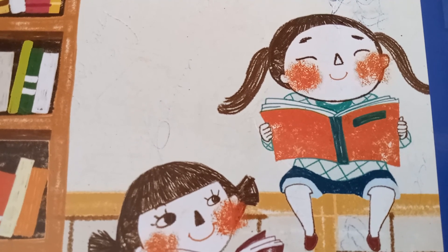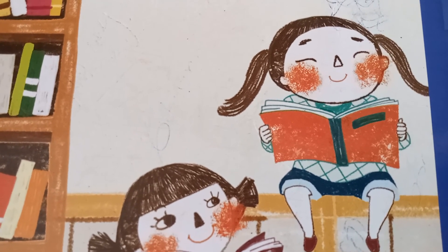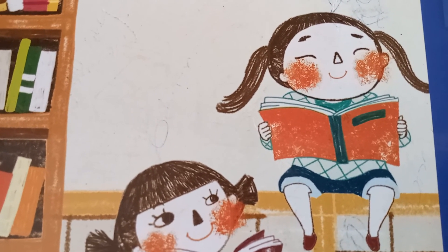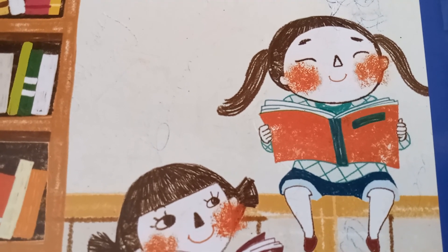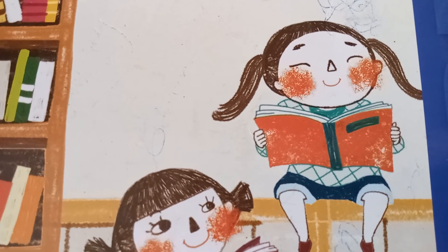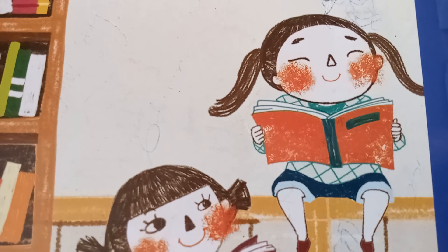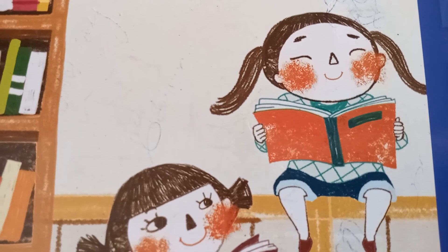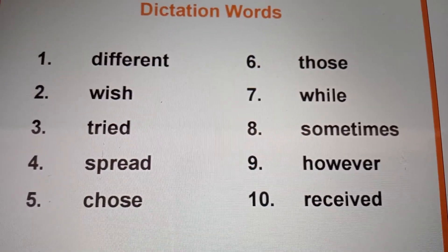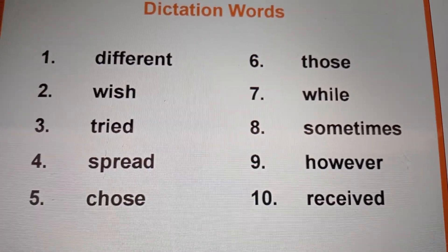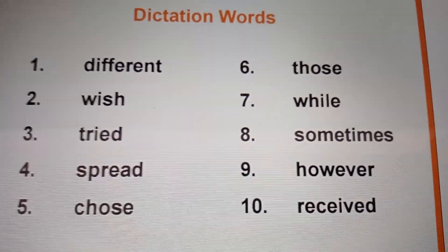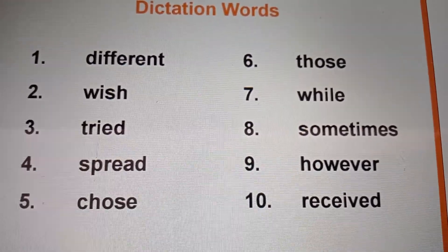Let us check your dictations. You make a self-correction. If you make a mistake, no problem — you have to write those words 5 times in your notebook. I will give you 30 seconds time; otherwise you have to pause the video. Self-correction.